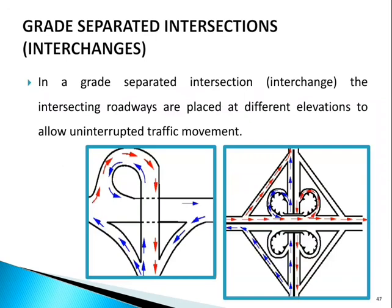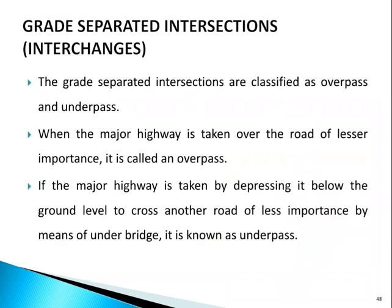In a grade-separated intersection or interchange, the intersecting roadways are placed at different elevations to allow uninterrupted traffic movement. Grade-separated intersections are classified as overpass and underpass. When the major highway is taken over a road of lesser importance, it is called an overpass; when depressed below ground level to cross a less important road, it is an underpass.